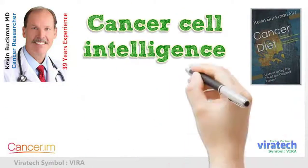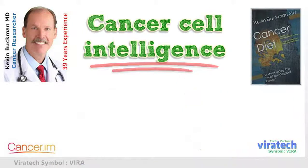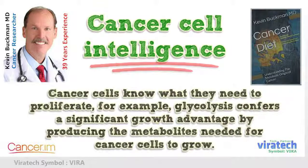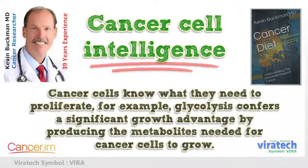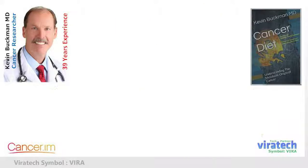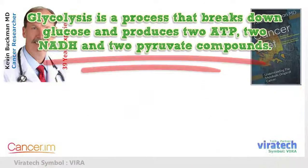Cancer cells know what they need to proliferate. For example, glycolysis confers a significant growth advantage by producing the metabolites needed for cancer cells to grow. Glycolysis is a process that breaks down glucose and produces two ATP, two NAD, and two pyruvate compounds.